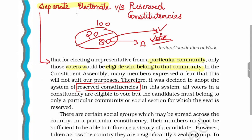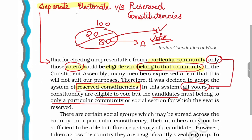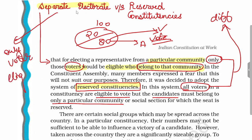In reserved constituencies, all voters are eligible to vote, but the candidate must belong to a particular community. In a separate electorate, only voters belonging to that community are eligible to vote. So the key difference is: in separate electorates, only voters of a particular community vote; in reserved constituencies, all voters vote — but in both systems, only a candidate from that particular community can stand for election.